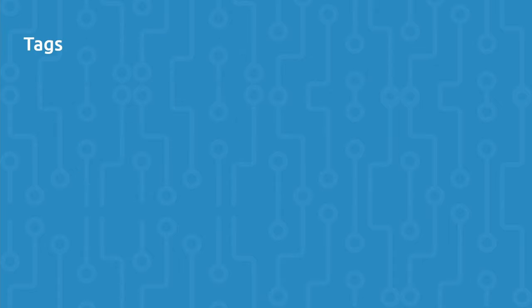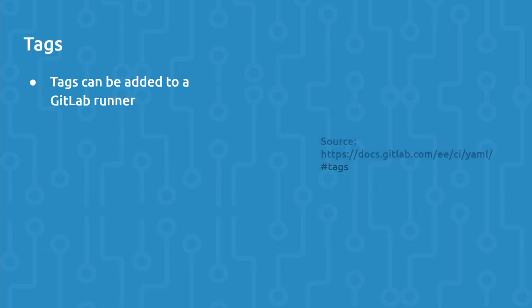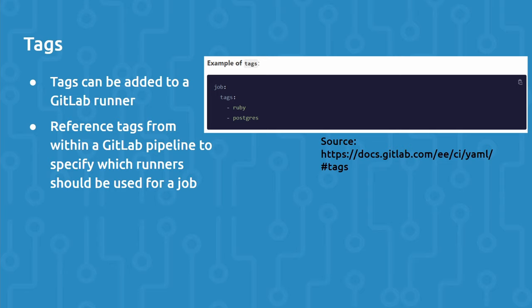Tags are a very useful feature of GitLab Runners. When you install and register a GitLab Runner, you can add tags to the Runner that can be referenced in a GitLab pipeline. When you reference a tag inside of a GitLab pipeline YAML file, you're filtering for only runners with that specific tag. This is useful if the pipeline requires specific dependencies — for instance, if you're running a Python script, you'd need Python installed in the runtime environment, so you might have a Python tag for GitLab Runners installed in an environment that includes Python.